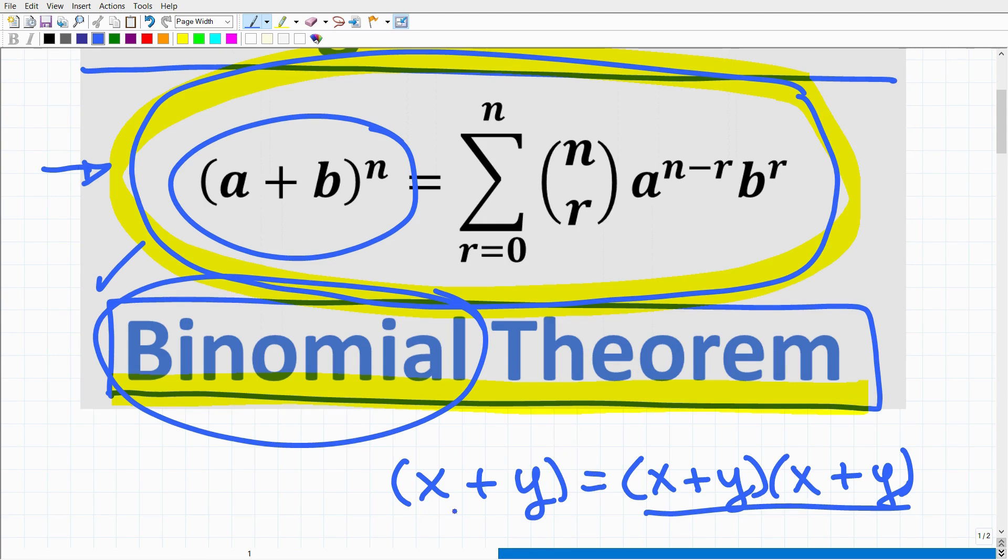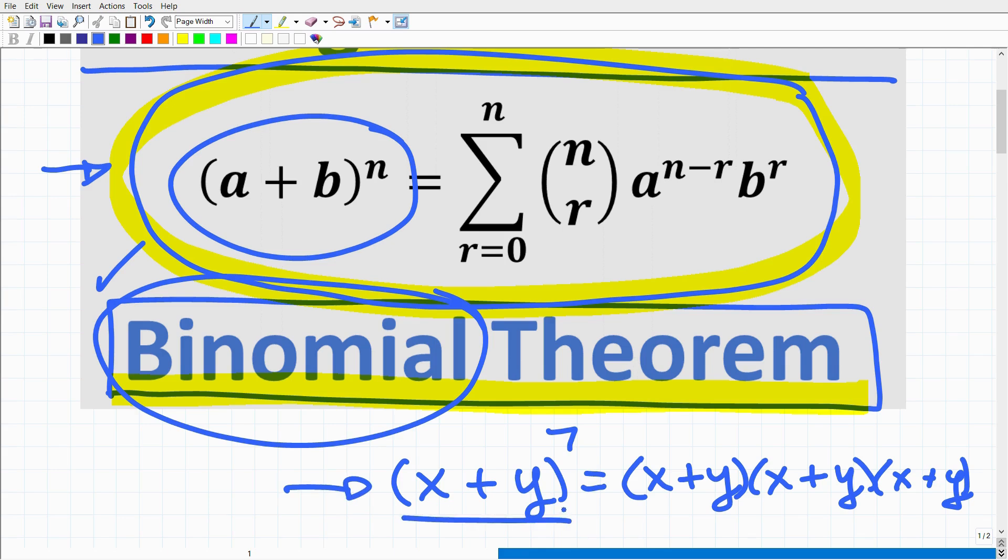But how about this problem, x plus y to the seventh power? Well, this is not a fun problem to do, right? Because now we have to take x plus y and multiply it by itself seven times. So that is a lot of work. And the binomial theorem is all about finding powers of binomials.